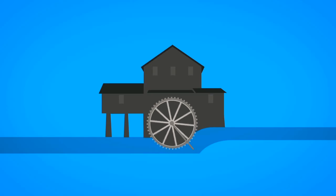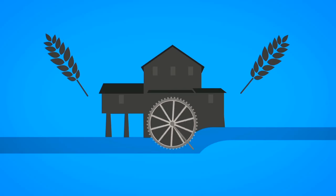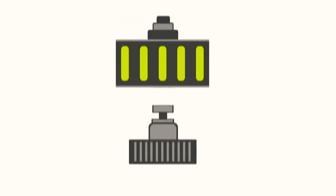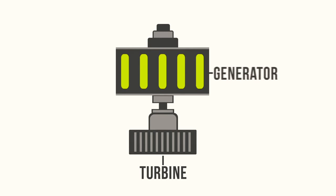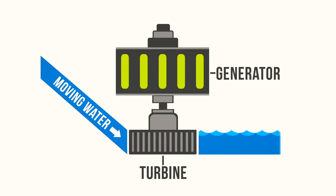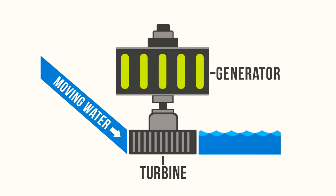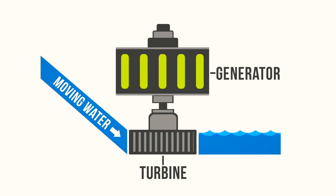One of the first uses of hydroenergy was for mechanical milling, such as grinding grains. But today, modern hydro plants produce electricity using turbines and generators. The mechanical energy created by moving water spins rotors on a turbine. This turbine is connected to an electromagnetic generator, which produces electricity when the turbine spins.